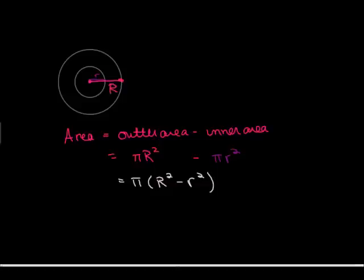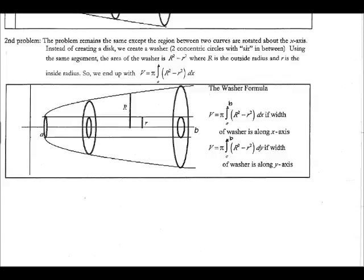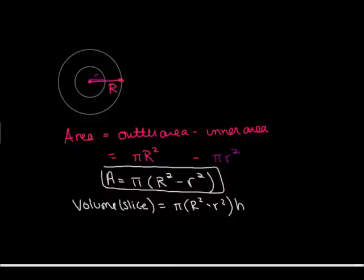Our washers have a certain degree of thickness, so it's really a cylinder with a hole. To find the volume of one slice or cross-section, we take this area and multiply it by some degree of thickness. So we take pi times (big radius squared minus little radius squared) and multiply it by some height. Our height, looking back at our picture, is the thickness of that washer — just like we did with the disc, that's going to be either dx or dy, depending on the problem.